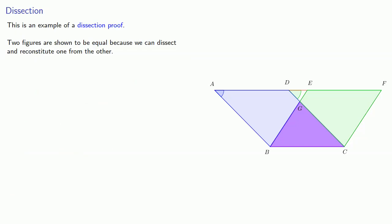This is an example of a dissection proof, a very important type of proof in Euclidean geometry. Two figures are shown to be equal because we can dissect and reconstitute one from the other.